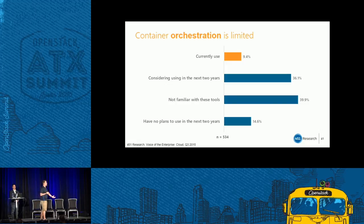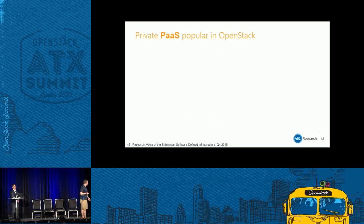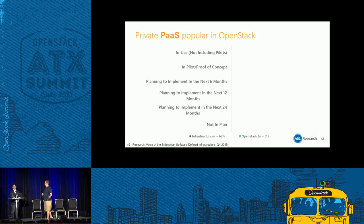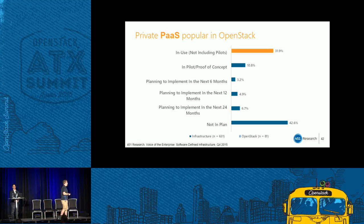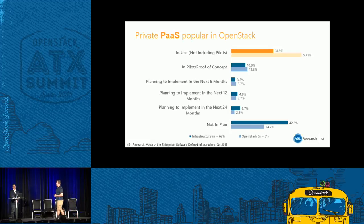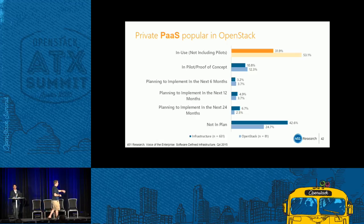I'm seeing two different approaches to container management emerging: an unopinionated approach built on things like Kubernetes and Mesos, and a very opinionated approach — what we call PaaS or platform as a service — that doesn't give you quite as much flexibility. We went out and asked about on-prem PaaS adoption among OpenStack users versus everybody. Private PaaS is surprisingly popular overall, but there's a significant 20-percentage-point higher adoption among OpenStack users.